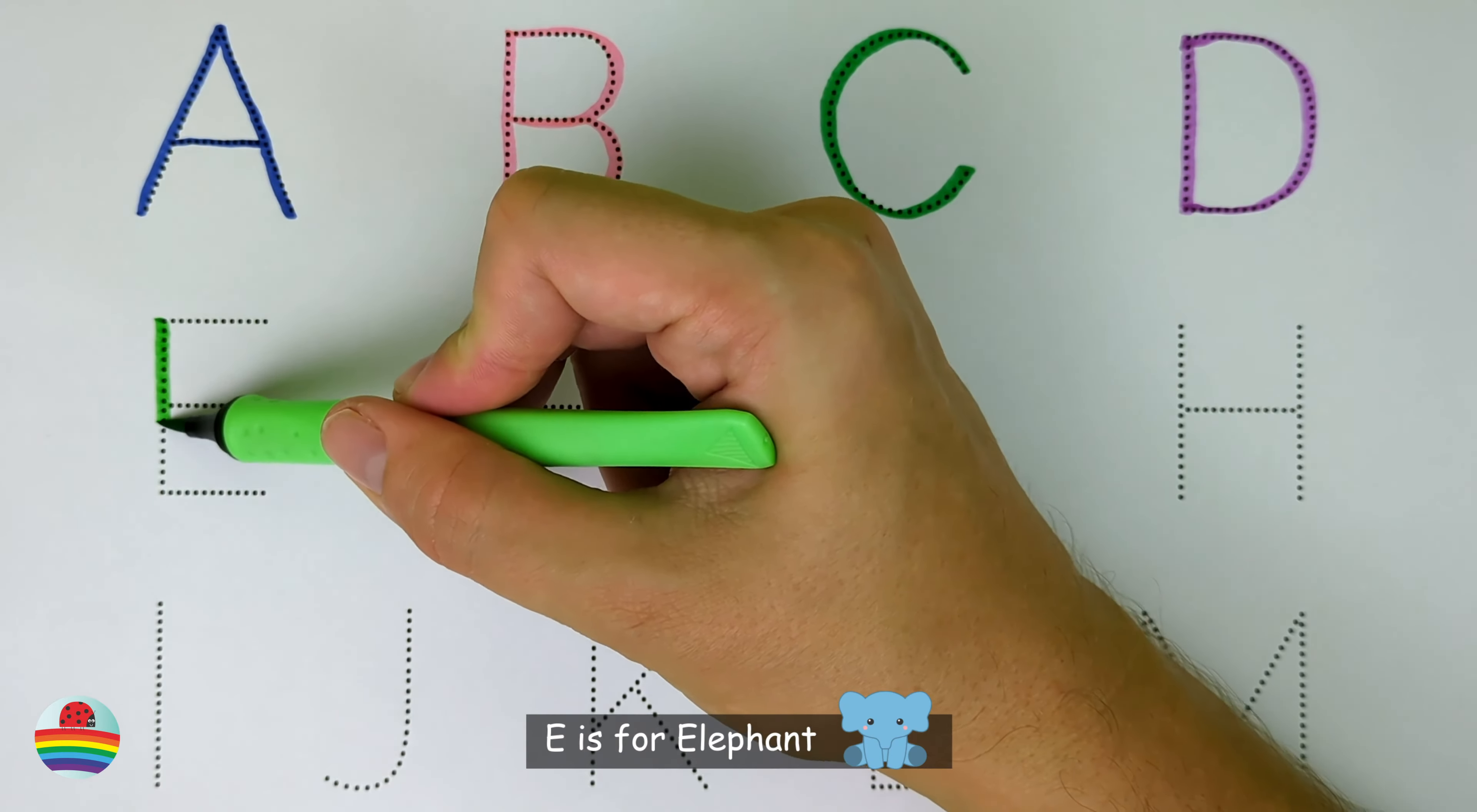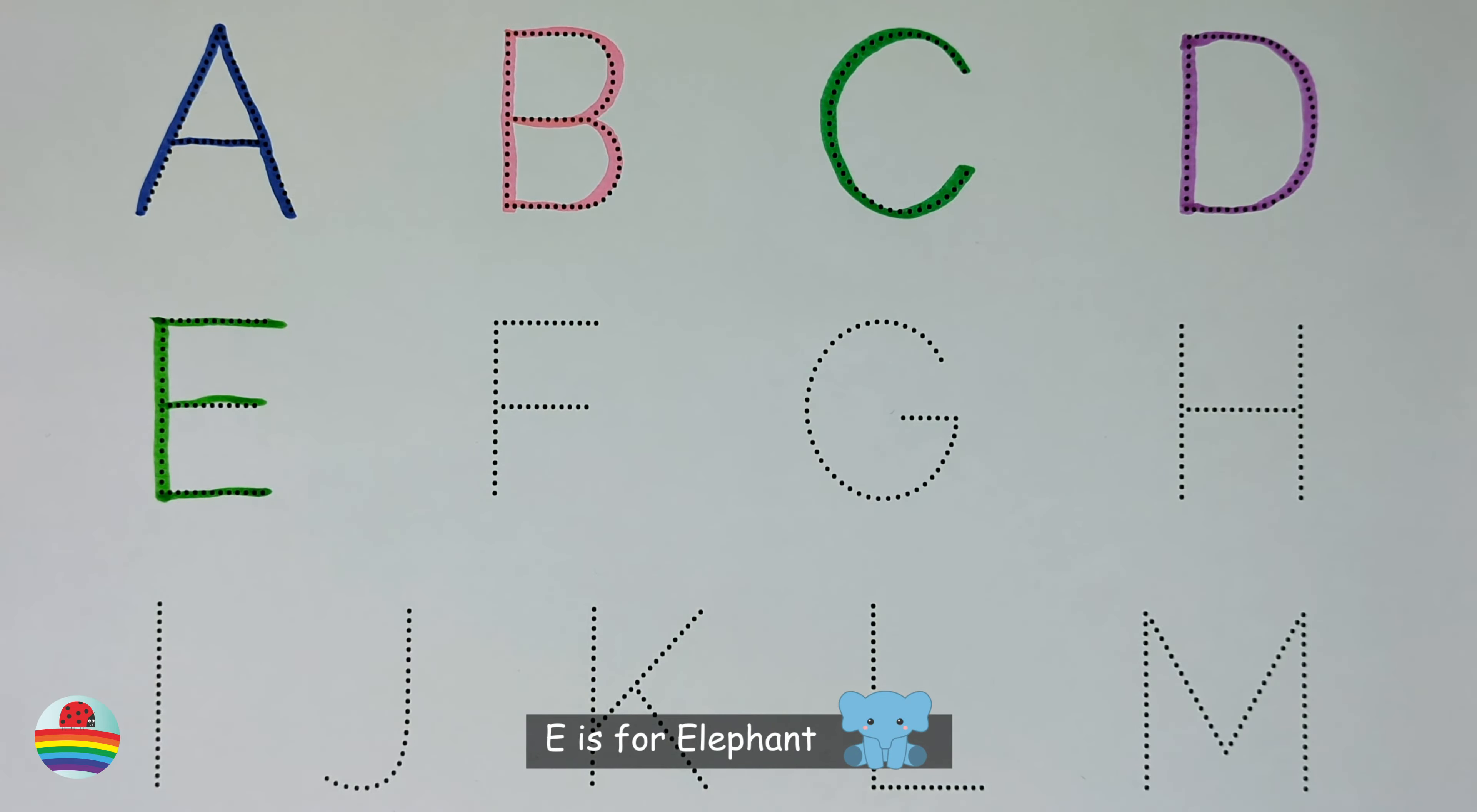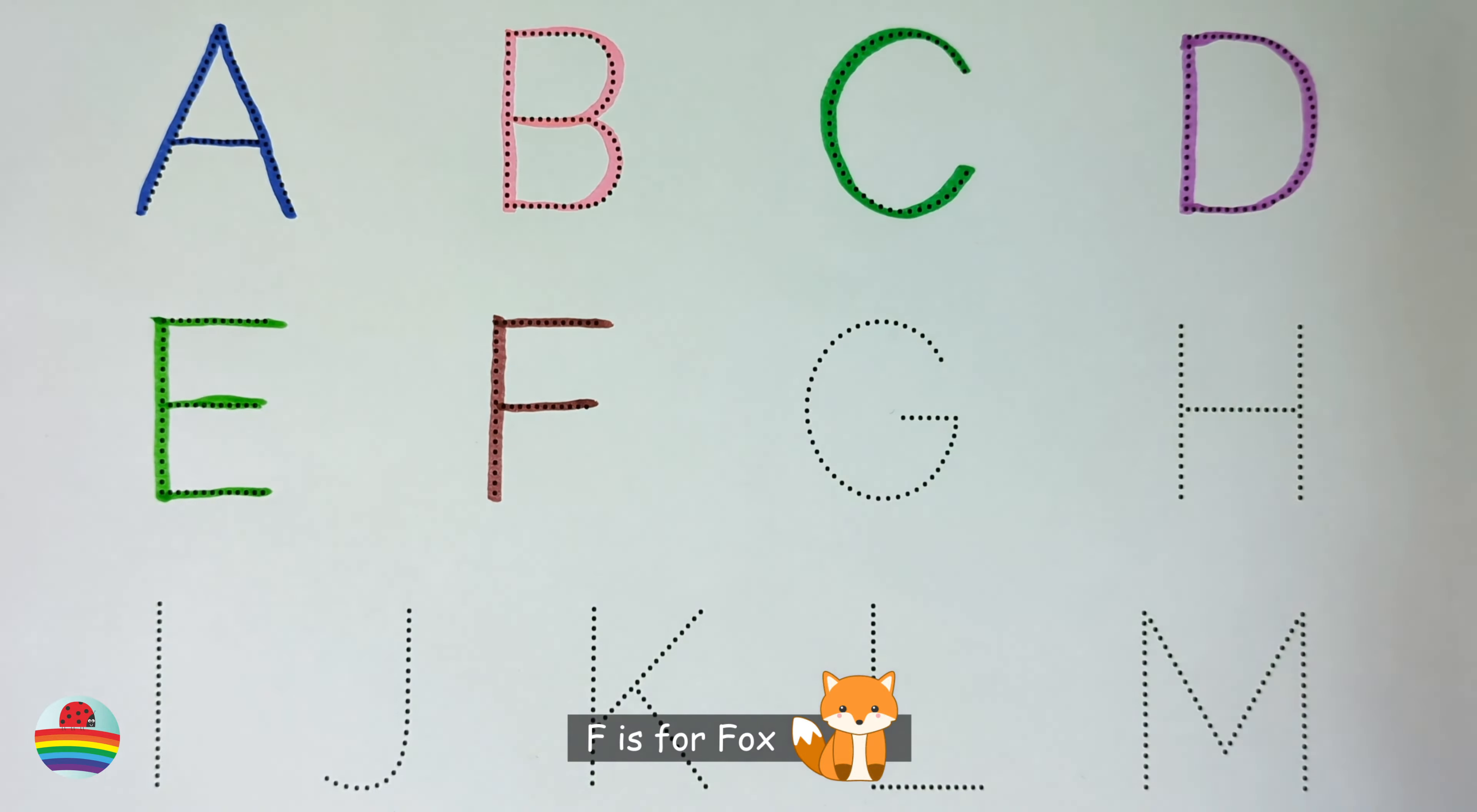E. E is for elephant. E. F. F is for fox. F.